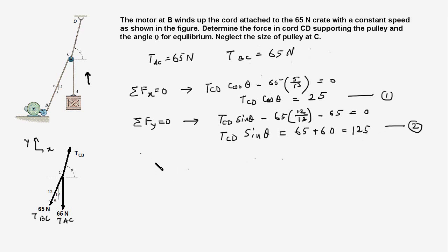Now we have two equations and two unknowns: TCD and theta. We divide equation two by equation one to get tan theta equals 125 divided by 25, which equals 5. Therefore, theta equals tan inverse of 5, which equals 78.69 degrees.